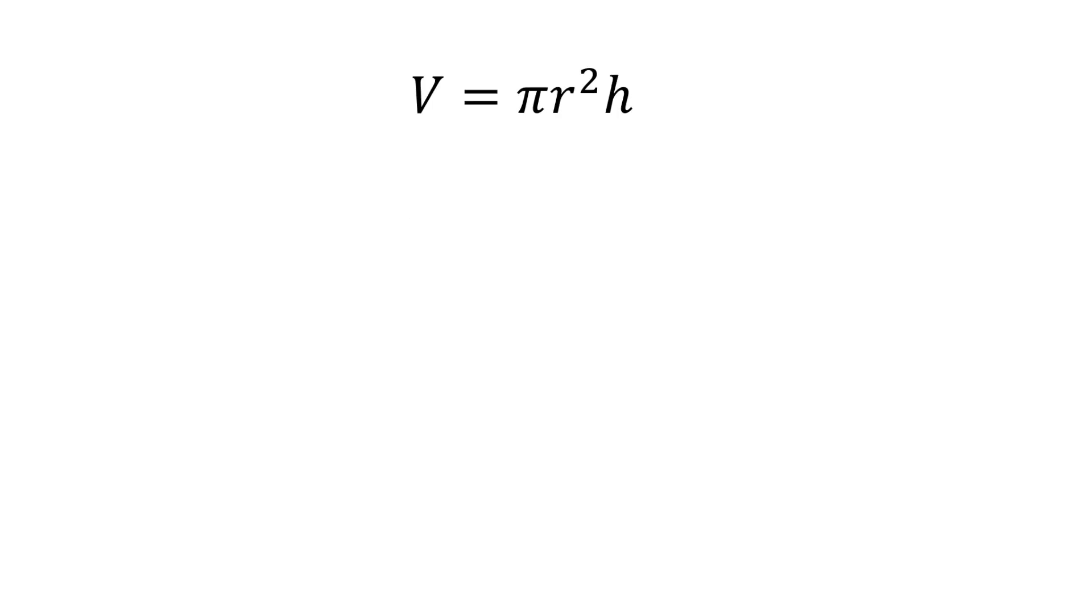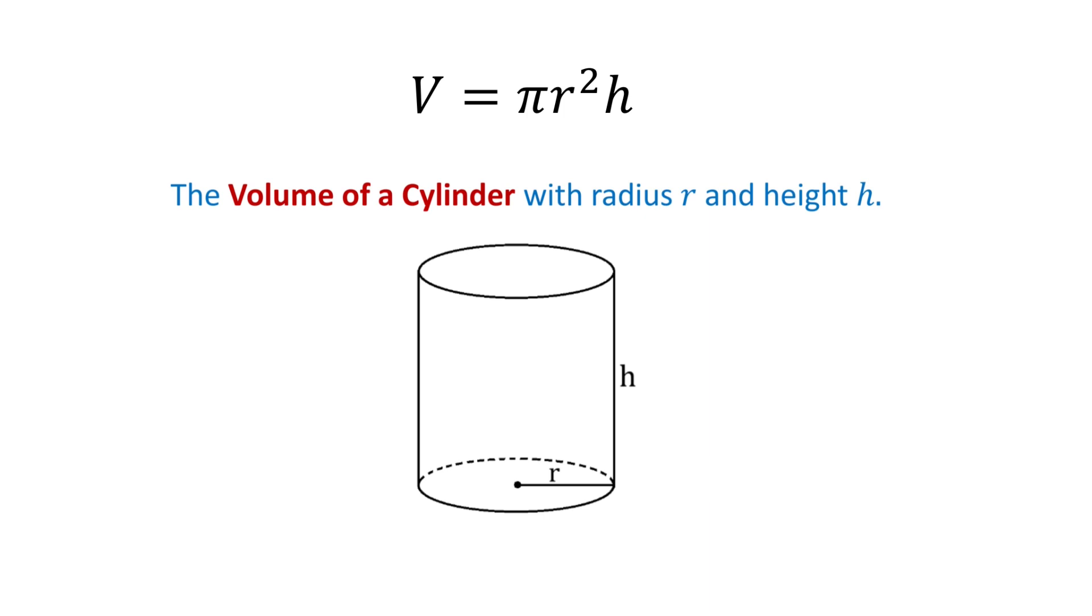The next formula is v equals pi r squared h. This is the volume of a cylinder with the radius r and the height h.